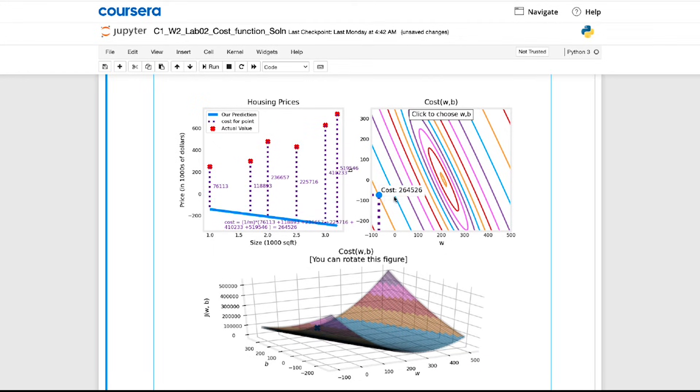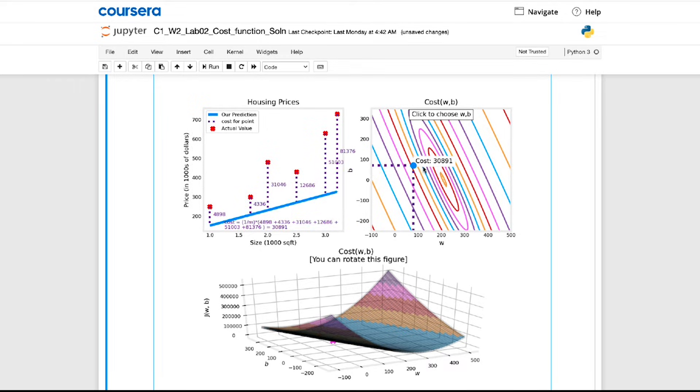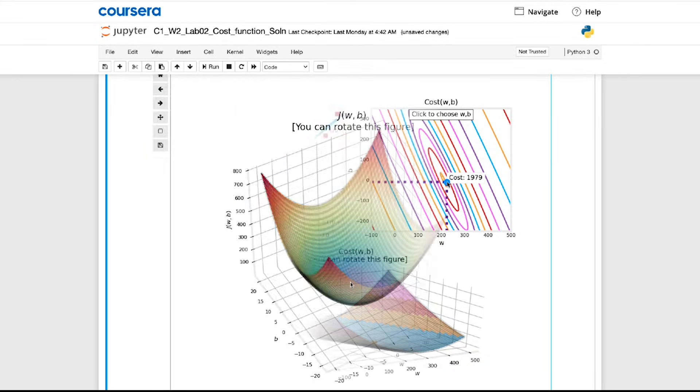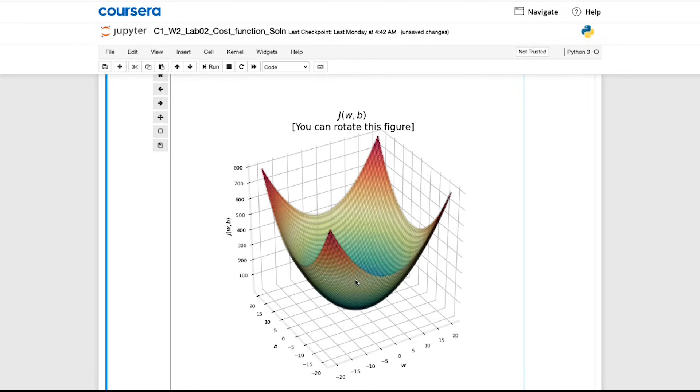In the optional lab, you also can play with an interactive contour plot. Check this out. You can use your mouse cursor to click anywhere on the contour plot, and you will see the straight line defined by the values you chose for the parameters W and B. You see a dot appear also on the 3D surface plot showing the cost.